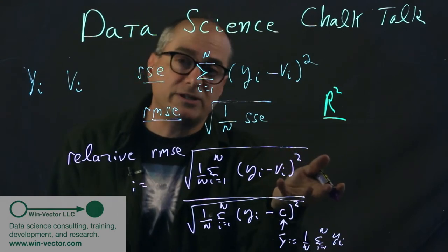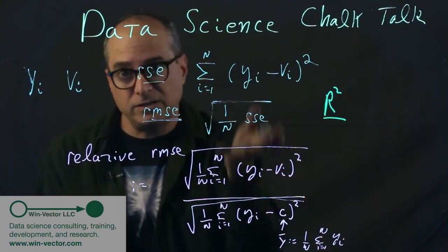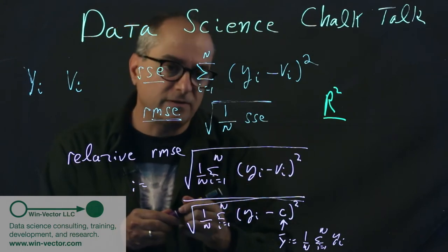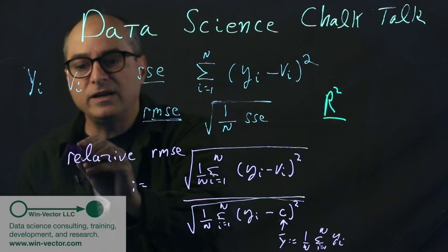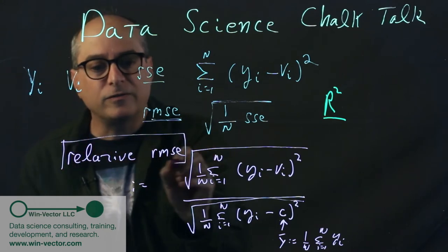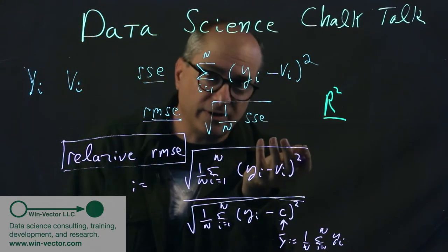So this is now a dimensionless quantity, because we divided two things with the same units by each other, therefore it's dimensionless. So if this was in dollars and this is in dollars, this is in an abstract unit. What is a desirable value for the relative RMSE? It's zero. We would like that to be zero.